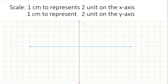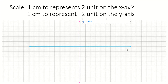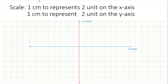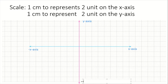So the next thing that we need to do is to label each of them so we don't get confused. We're going to label our y-axis, and then we're going to label our x-axis. You can label these sides as well so we know that over here will be our negative x-axis, and down here we're going to have our negative y-axis.